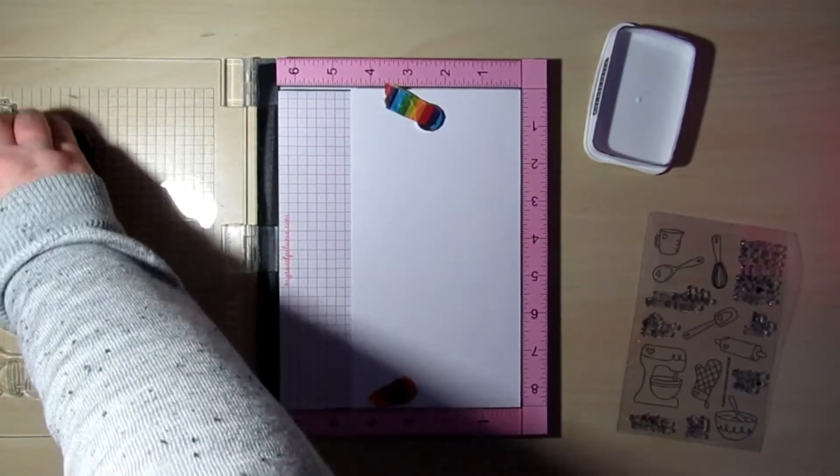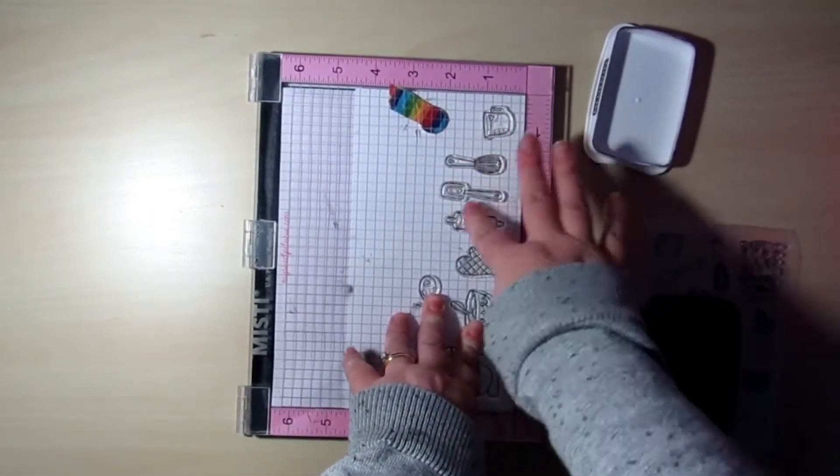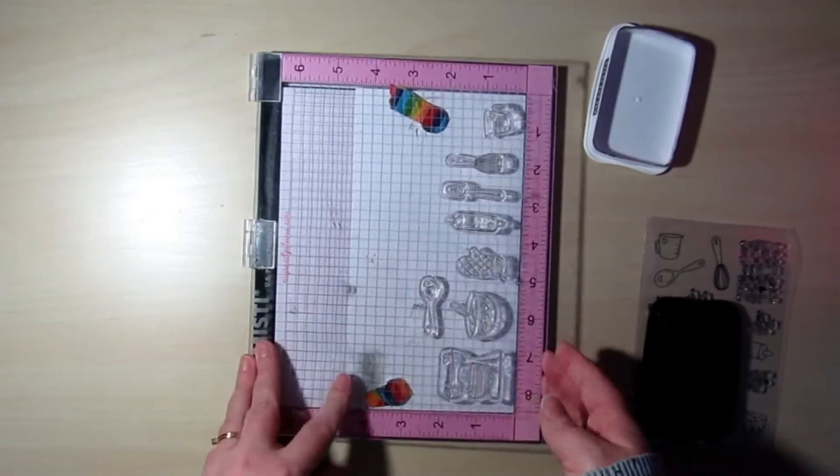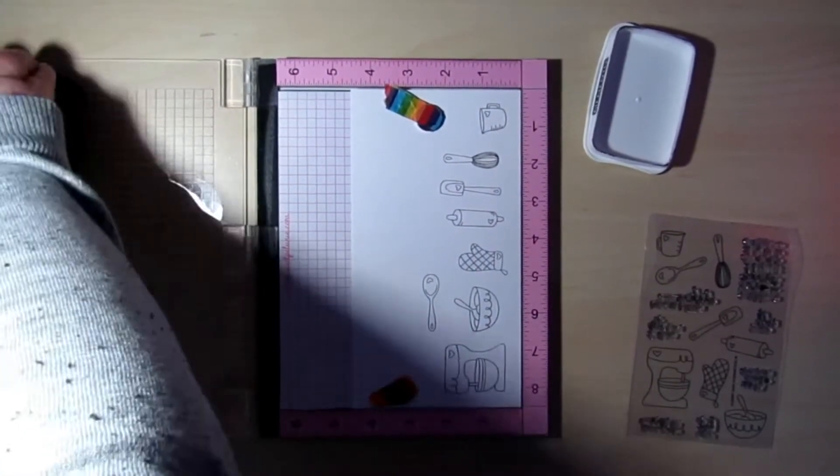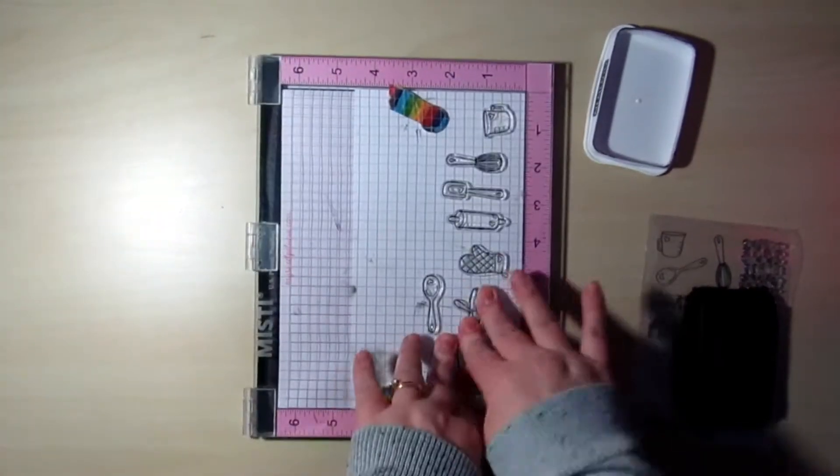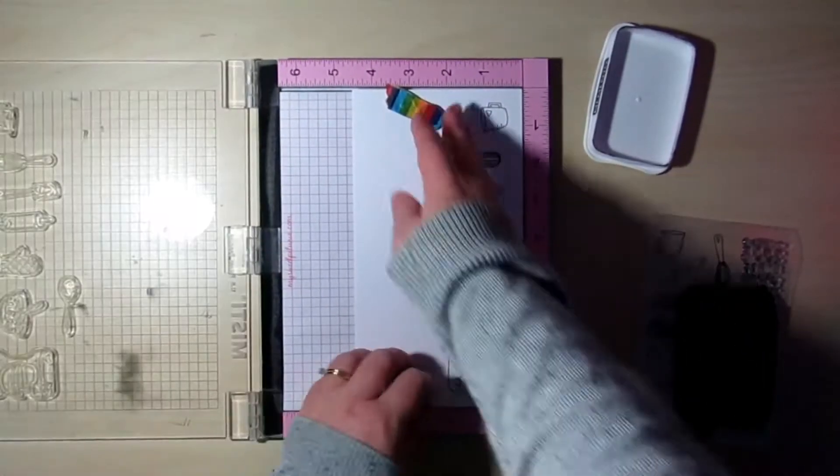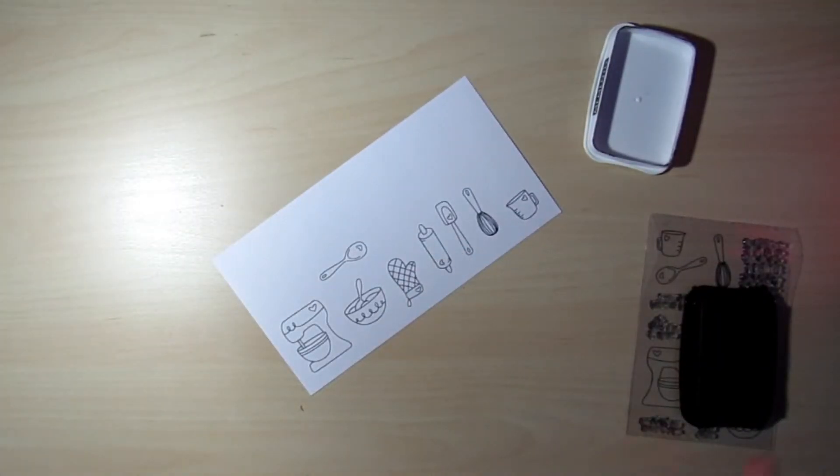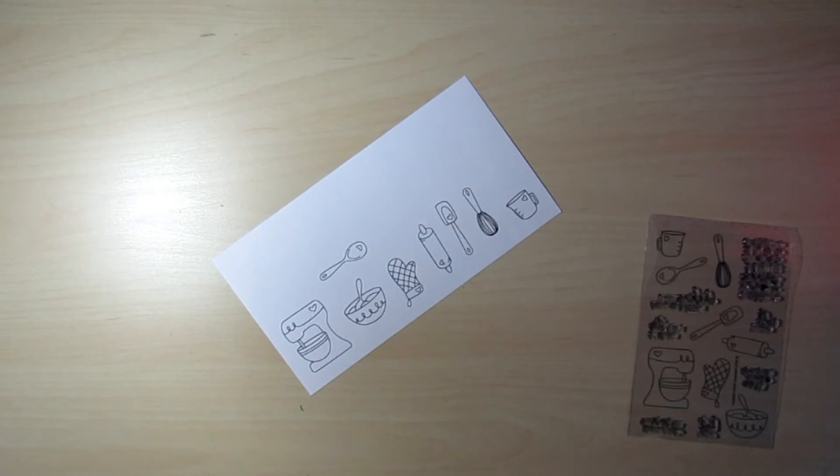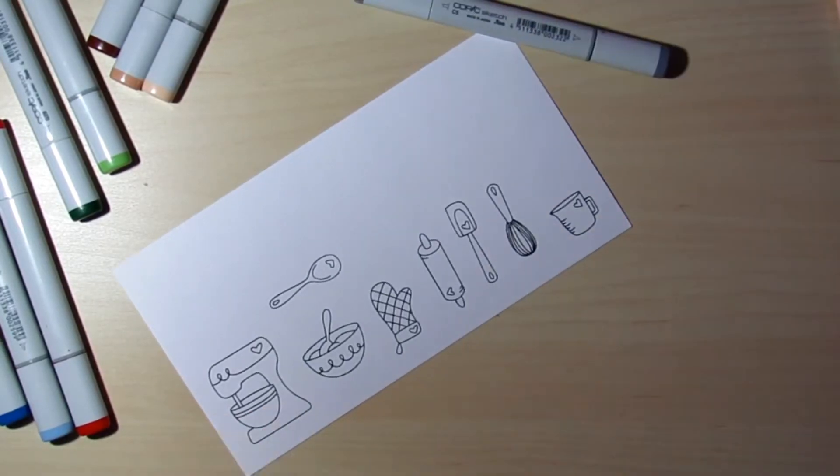Again, just using my Memento Tuxedo Black ink, I'm going to go ahead and stamp that two times. I have had this peekaboo wheel for a little while and I haven't been brave enough to use it yet. So we're going to discover how to use this today. This stamp set is super adorable and I thought it'd be perfect for this interactive card.